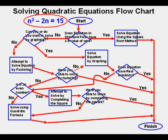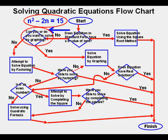Now we will look at our next quadratic equation: n squared minus 2n equals 15. We start by asking the question: does the equation in standard form have a b value of zero? Since we have minus 2n, the answer is no, and we take the blue arrow to the left. Then we ask: can you or do you want to solve by graphing? We'll say no this time and head off towards solving by factoring.